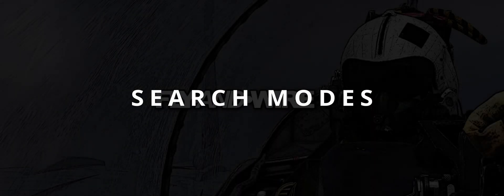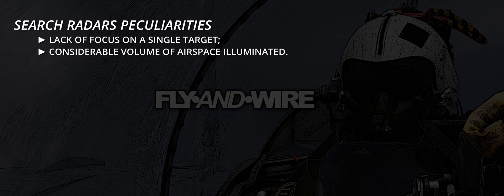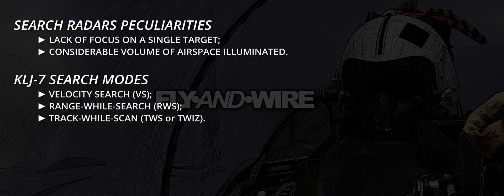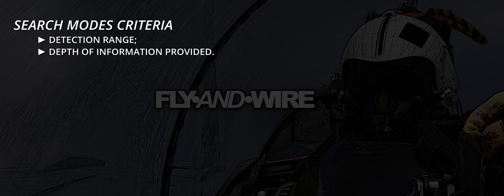Search modes. The main peculiarities of air-to-air radar search modes are, usually, the lack of focus on a single target and the volume of airspace illuminated. The KLJ-7 provides three search modes: velocity search (VS), range while search (RWS), and track while scan (TWS or TWIS). More or less, these modes absolve a similar function — build and maintain situational awareness. There are two parameters worth considering to differentiate them: detection range and depth of information provided.